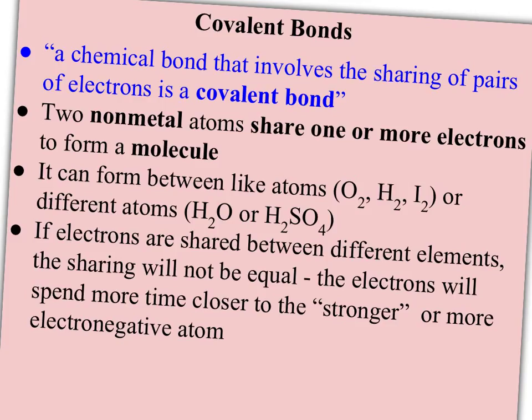Covalent bonds can form between like atoms — oxygen, hydrogen, and iodine all combine with themselves to form O2, H2, and I2, which is how they tend to be in their pure form. They can also form between different atoms like H2O or H2SO4. If the electrons are shared between different elements, the sharing will never be totally equal — there's always going to be one atom that's more electronegative, and it will tend to pull the electrons more strongly to its side.